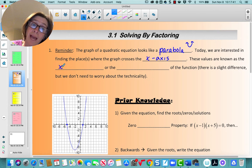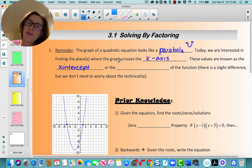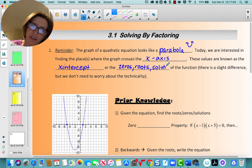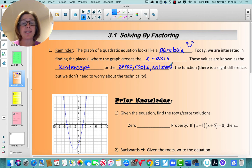These values are known as, normally you call them the x-intercepts, but they're also called the zeros of the functions or the roots of the function, possibly the solutions of the function. And there is actually a slight difference, but right now we're not going to worry about that technicality.